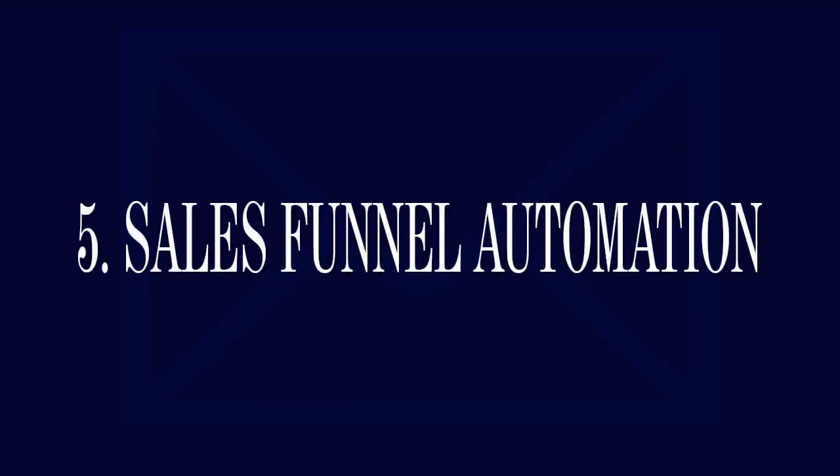Feature five: Sales funnel automation. System.io empowers you to create and automate sales funnels, guiding your subscribers through a seamless journey from awareness to purchase. This feature streamlines the entire process and maximizes your chances of generating affiliate sales. The platform also allows you to create courses and sell them within the same platform.